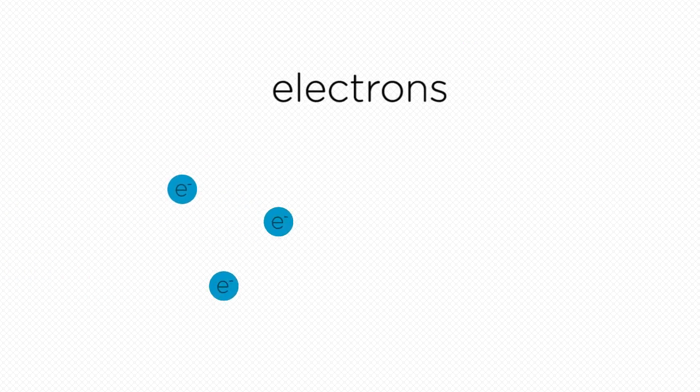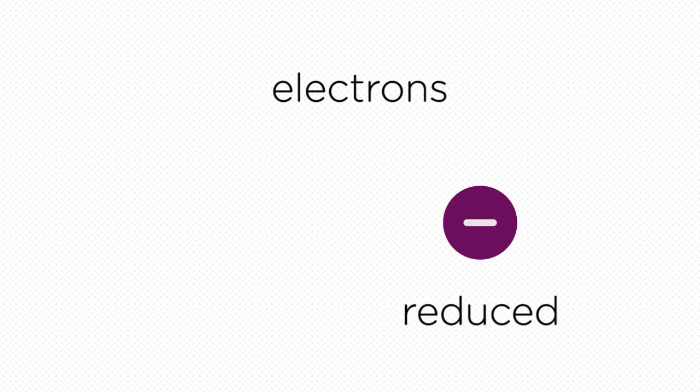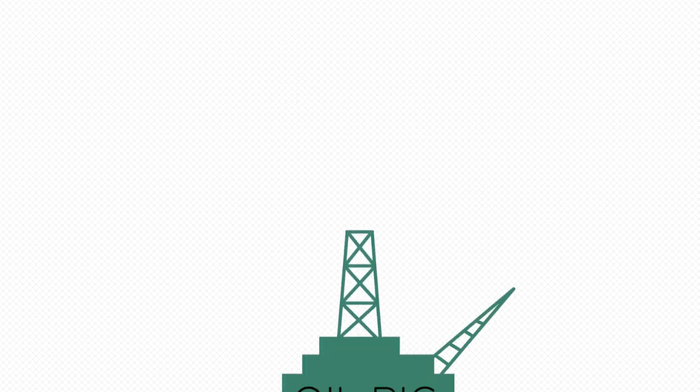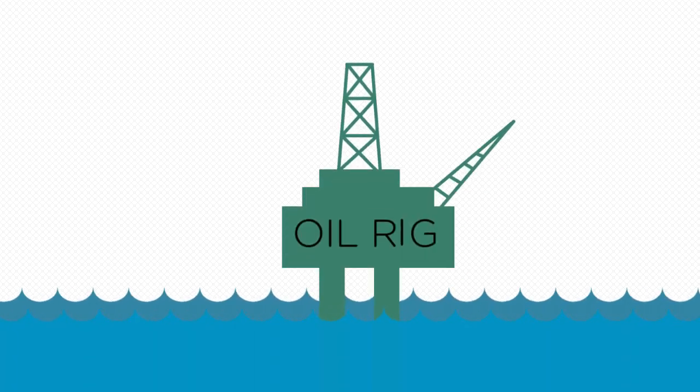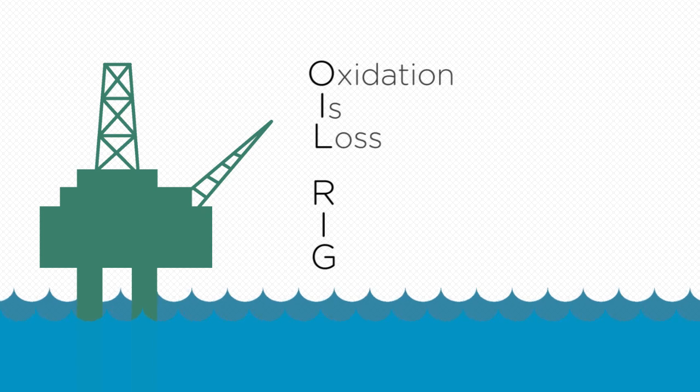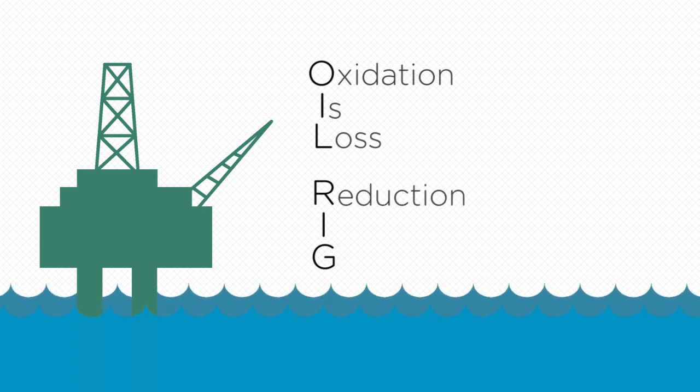Electrons are negative meaning that gaining electrons makes an element more negative. In other words it is reduced. If you find this difficult to remember the mnemonic OIL RIG might help. Oxidation is loss. Reduction is gain.